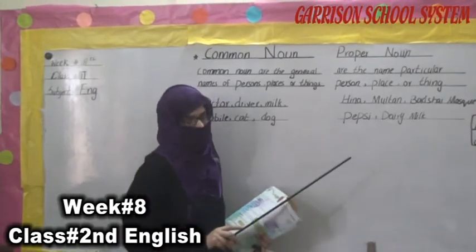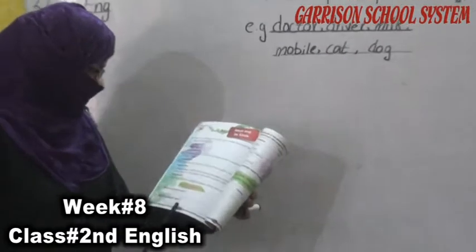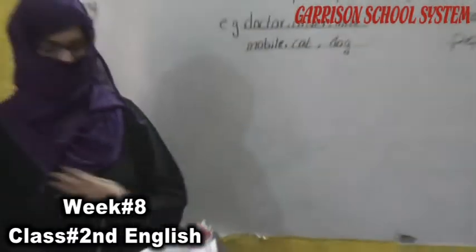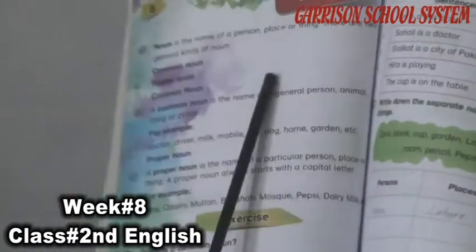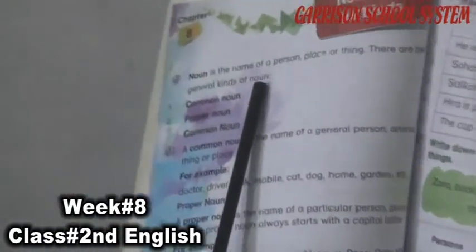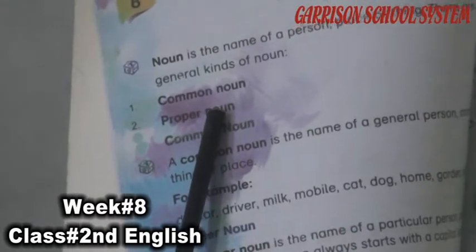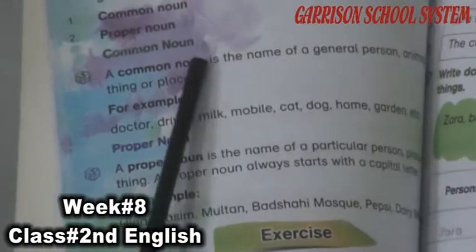That means the complete name. Now come to book page number 18, which is about noun and its kinds. The first one is about the noun — as you know, the name of a place, person, or thing is called a noun. Second, there are two types of nouns: common noun and proper noun, as I told you with examples.